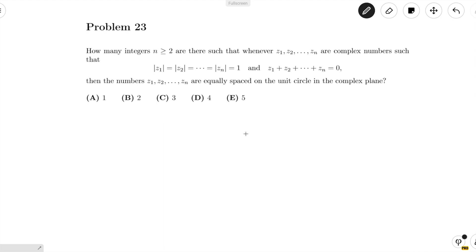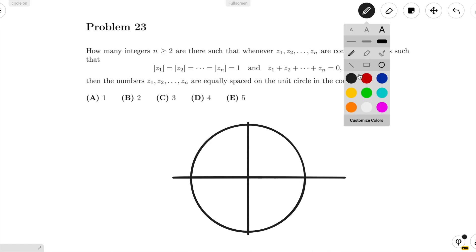Now whenever you see that the magnitudes are all equal to 1, you know that all the complex numbers fall on the unit circle centered at the origin. So let's draw that unit circle real quick.